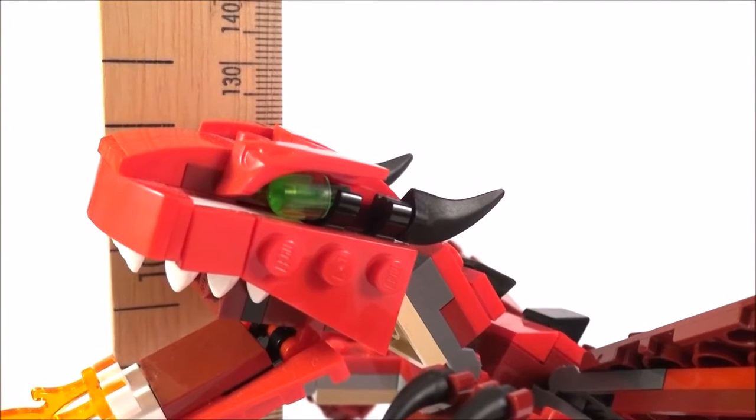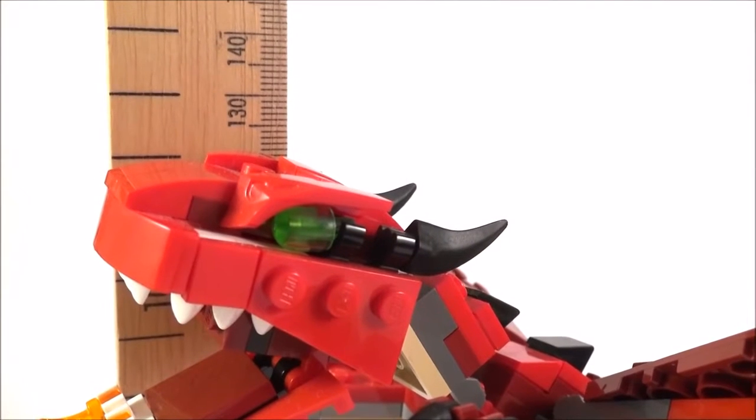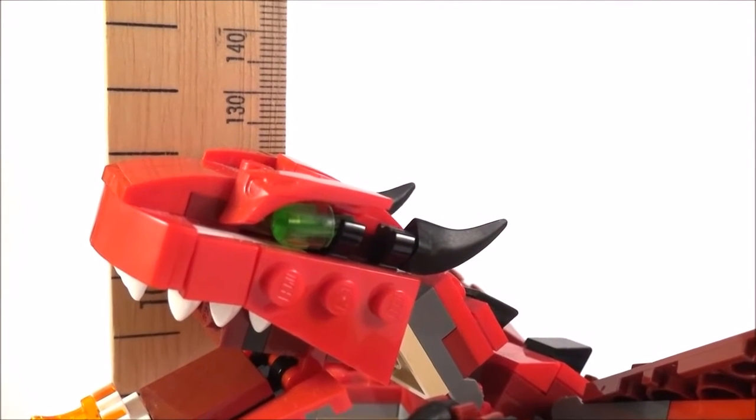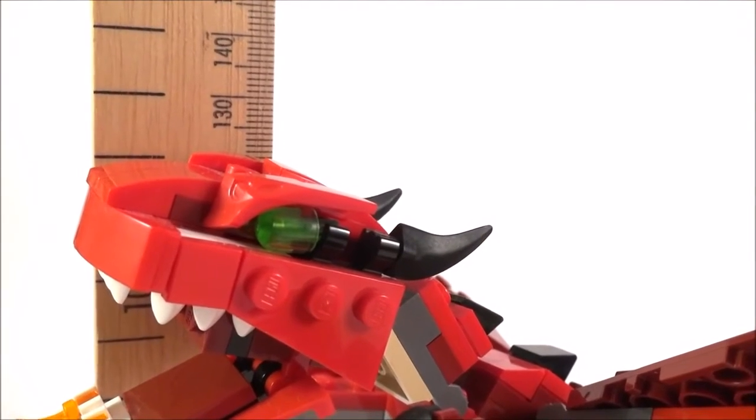So to reduce any error, what I'm doing is I have my eye in line with the thing that I'm actually recording, as well as making sure the ruler is as close to it as possible. And this gives me my most accurate reading without any parallax error.